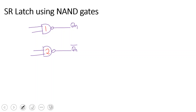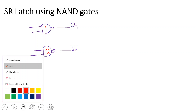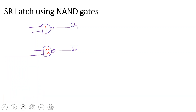A latch is called a sequential circuit. You can see the feedback path — QN output feeds back as input to Gate 2, and QN bar feeds back as input to Gate 1. This connection is called cross-coupling. The SR latch is nothing but a cross-coupled NAND gate configuration.